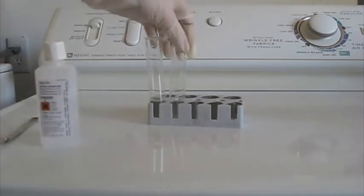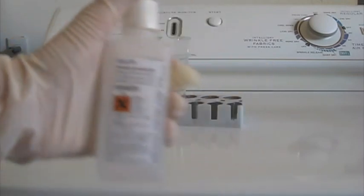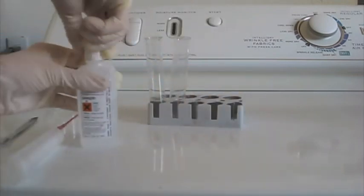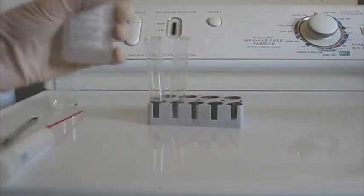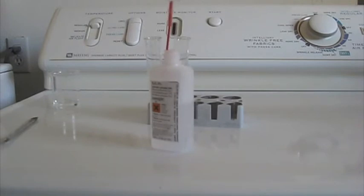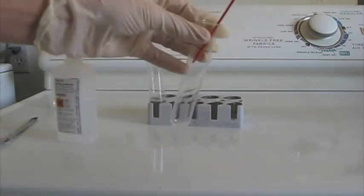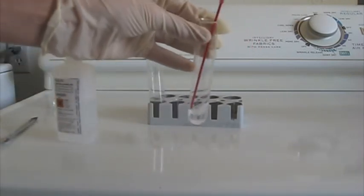Now in the second test tube, I'm going to place about 5 milliliters of hydrogen peroxide. Here's 5 milliliters of hydrogen peroxide.